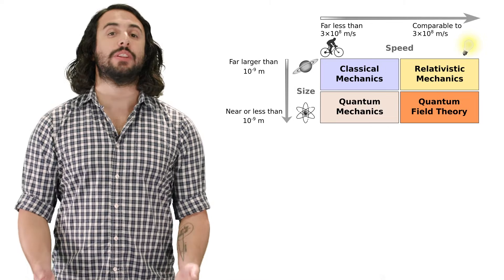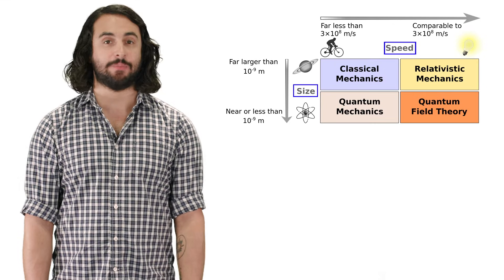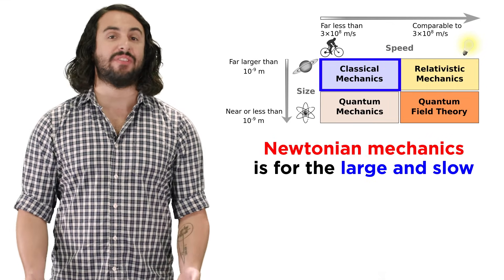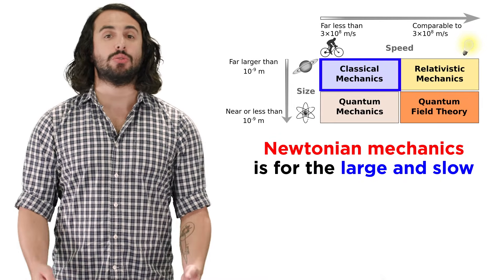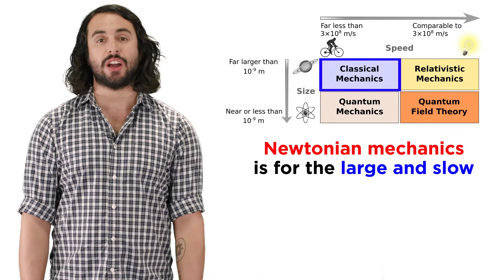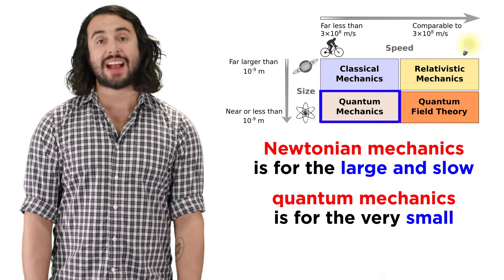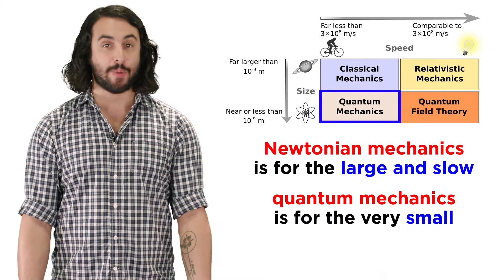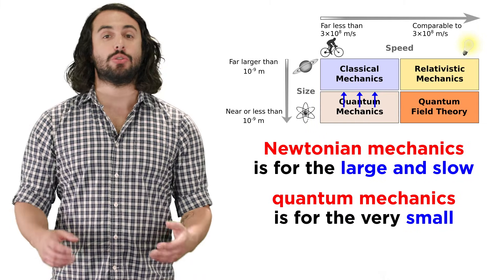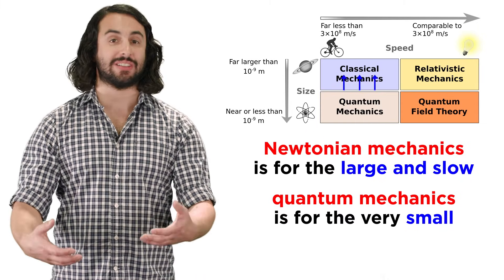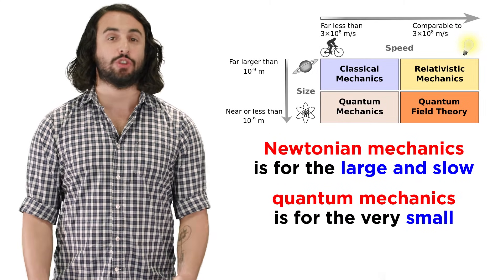And so as we look at these four quadrants, along axes that represent size and speed, we can see that the realm of the very large and the very slow represents the Newtonian mechanics that we took for granted for hundreds of years as being the rules of the universe. As we explored the realm of the very small, we found that quantum mechanics had to be developed, from which Newtonian mechanics emerges when objects become large enough that their wavelengths become negligible.